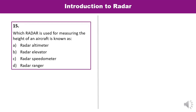Question 15: Which radar is used for measuring the height of an aircraft? The height of an aircraft is measured by a radar altimeter — you must remember this. A is the correct answer.